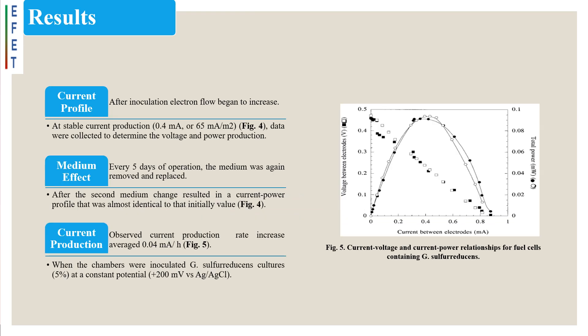Results section: In this experiment, 5 millimole of acetate was provided as the electron donor. After inoculation, electron flow began to increase soon. When electrical current production became stable at 0.4 milliampere, or 65 milliampere per square meter of electrode surface, data were collected to determine the voltage and power production.